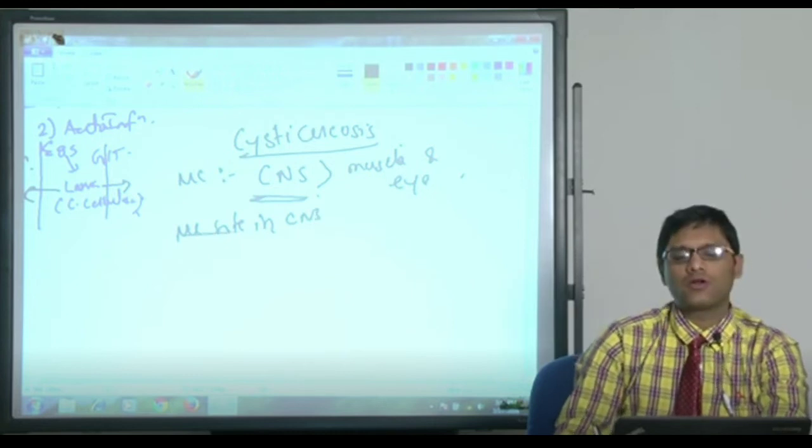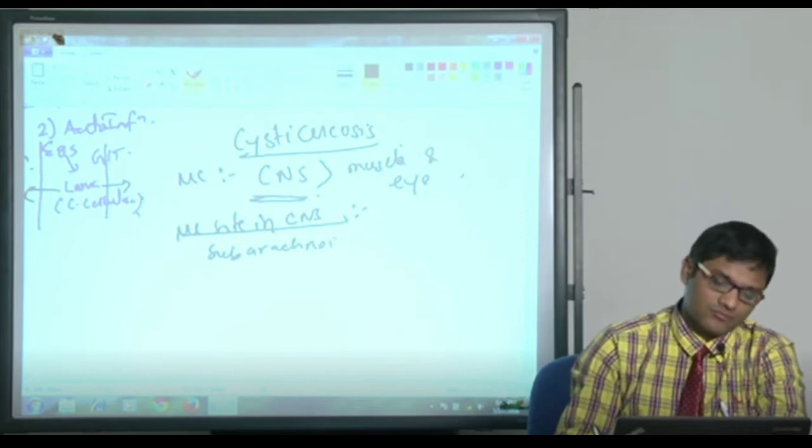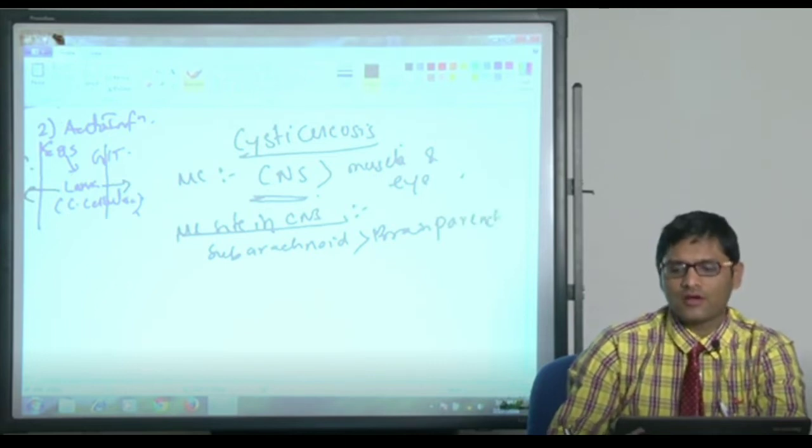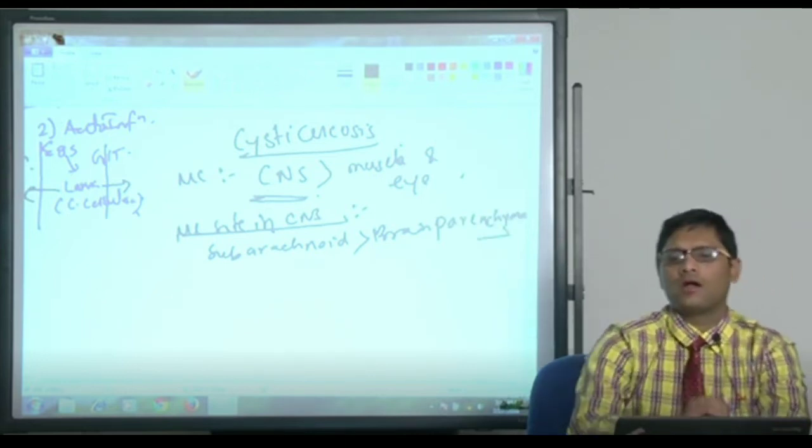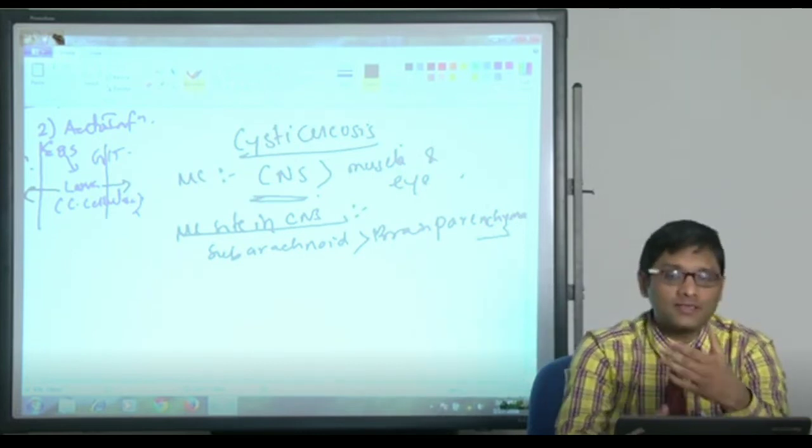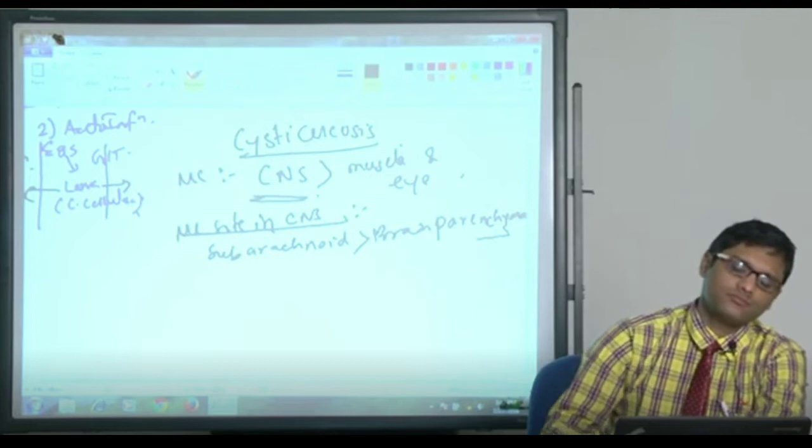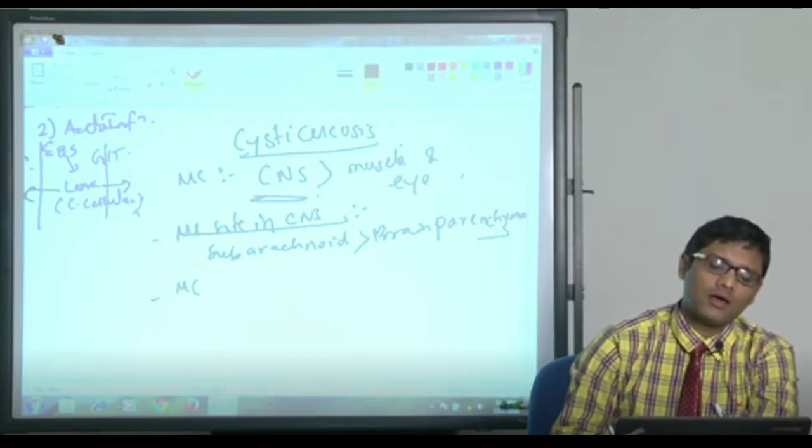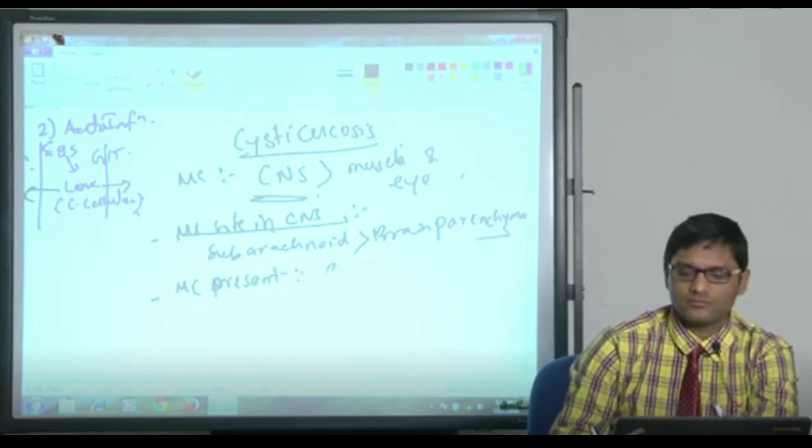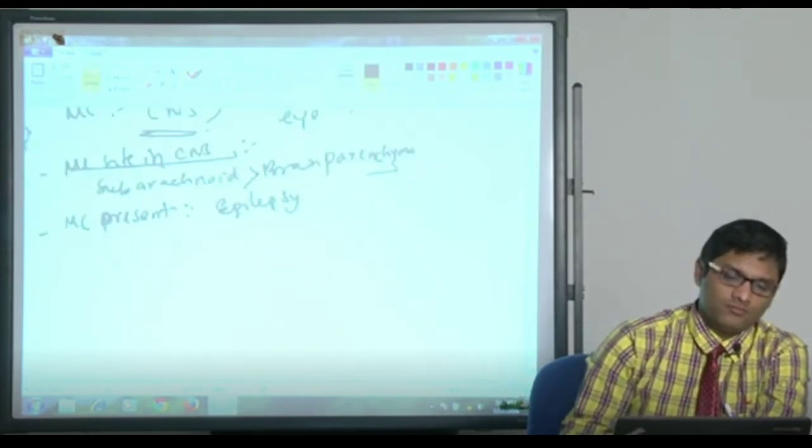Neurocysticercosis is the most common site. Most common site in CNS - this is a controversial MCQ. Some books say subarachnoid space, whereas some say brain parenchyma. But according to my view, many recent articles say subarachnoid space is now replacing brain parenchyma. Most common site in CNS.